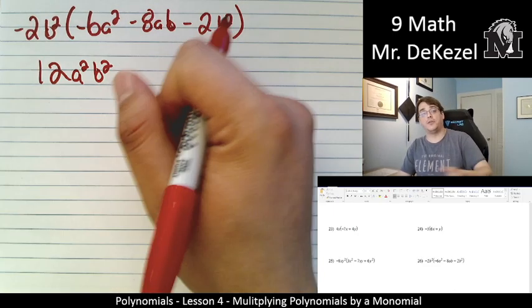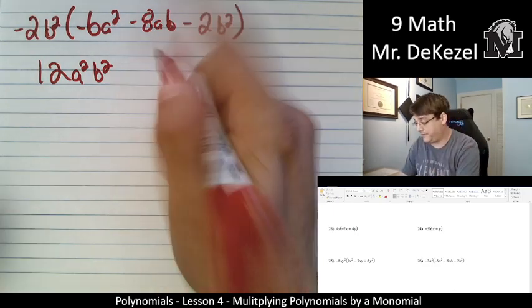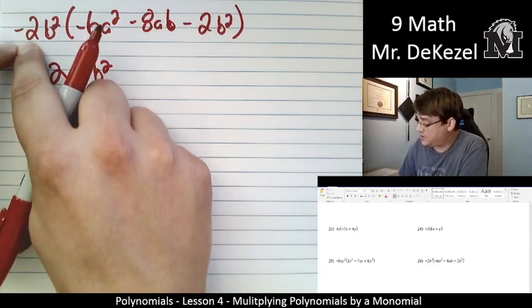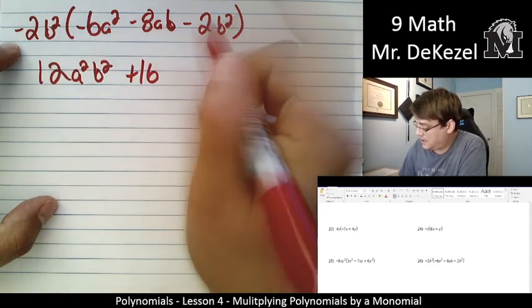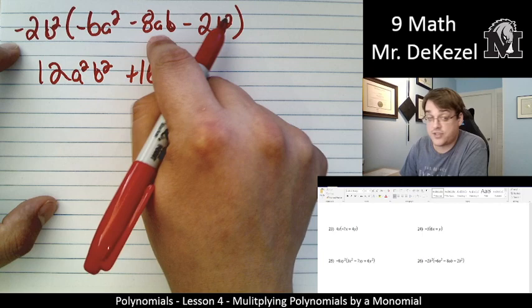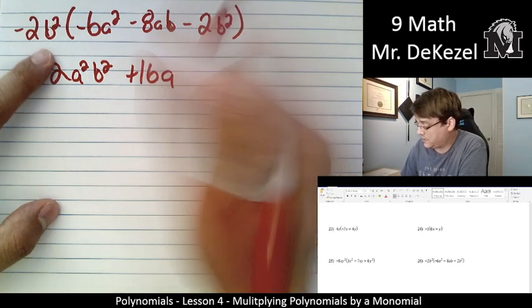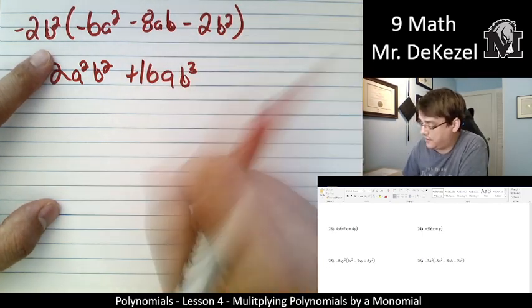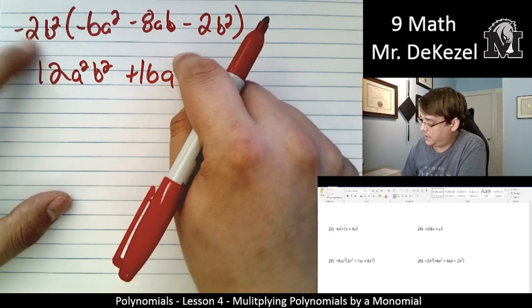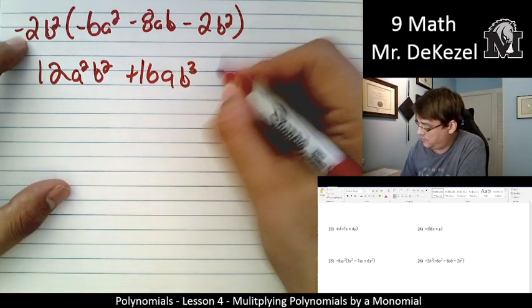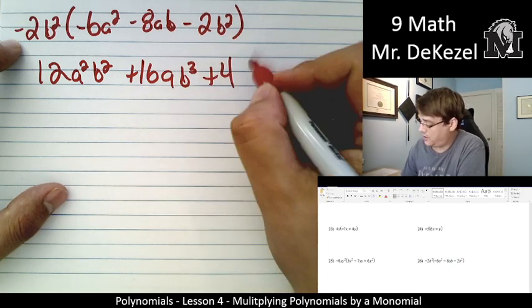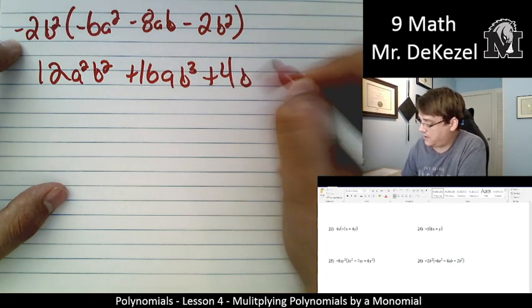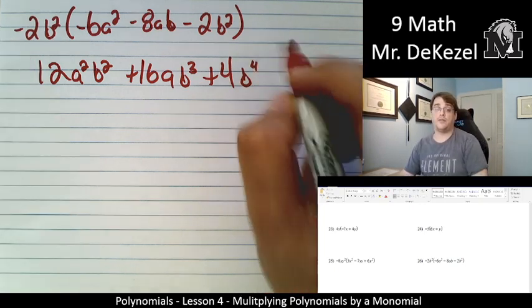Minus 2 times minus 8, that's plus 16. a just comes along. There's nothing to do with it. But the b's can be multiplied together to get b to the power of 3, 2 plus 1. And then we go minus 2 times minus 2, that is plus 4. And no a's, but we bring our b's together to be b to the power of 4.